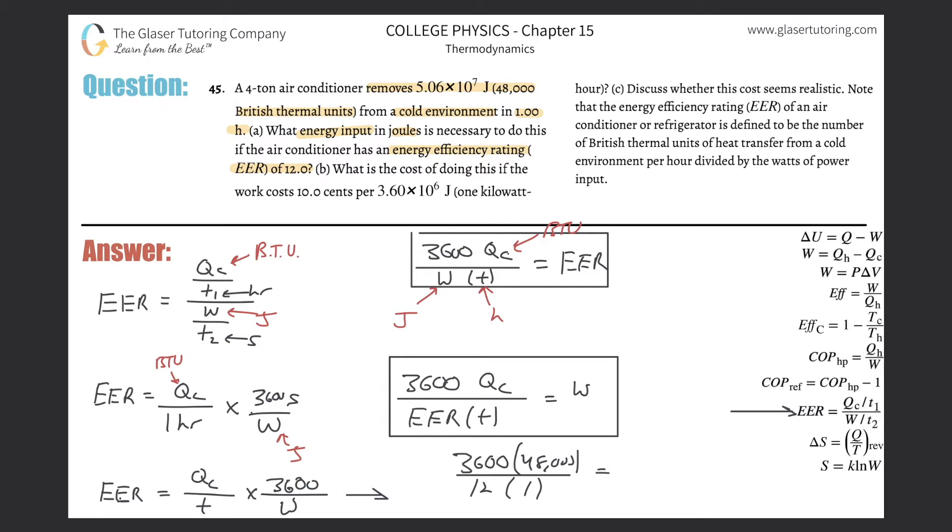Just plug it on into the calculator. So, 3,600 times then 48,000, divided by 12, and here we get a value of about 1.44 times 10 to the 7. All right, and joules. That is the work input, and that's all you have to do.